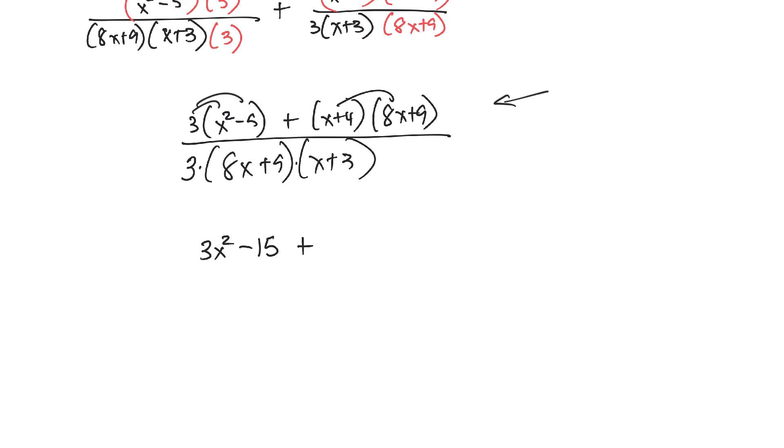and now I'll do the whole foil thing here. 8x squared plus 9x plus 32x plus 36, all over my lowest common denominator.